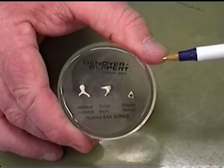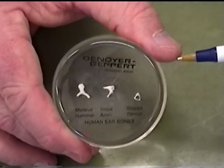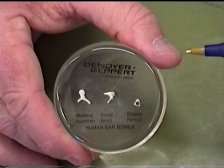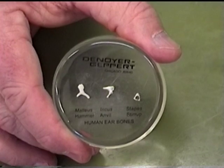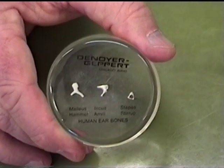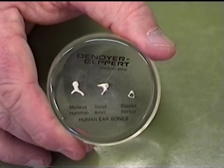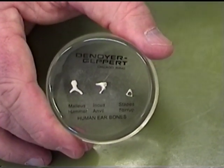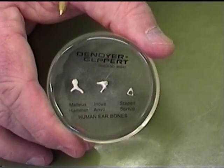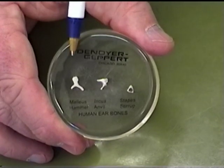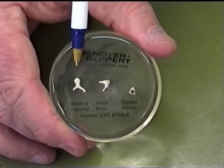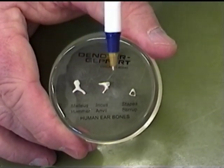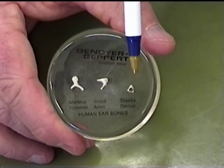The concha gets its name because it's whorled like a conch or a snail. As you recall from the skull, we had three little bones in our ear called the inner ear ossicles, located in the petrous portion of the temporal bone. In order, they would be the malleus, the incus, and the stapes.